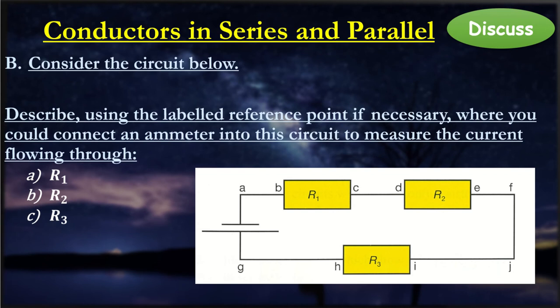The next part of this analysis is describe the use of label diagrams, where you would connect the ammeter to measure the current flowing through the circuit. If I want to know exactly what the current is for my series circuit, for R1, R2, R3, think about it very carefully. The actual answer to this is very straightforward.